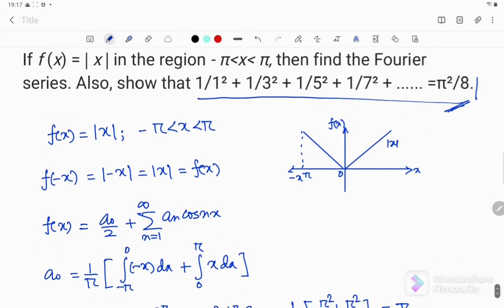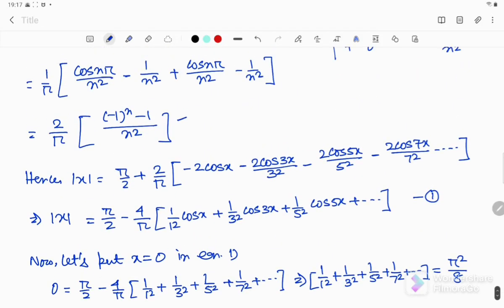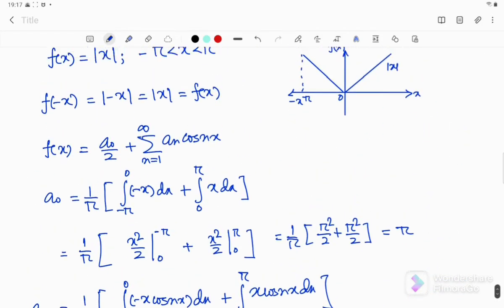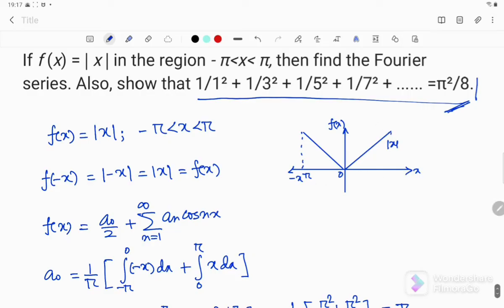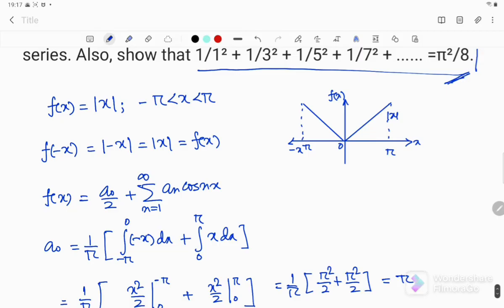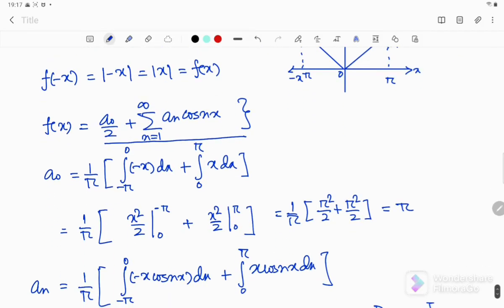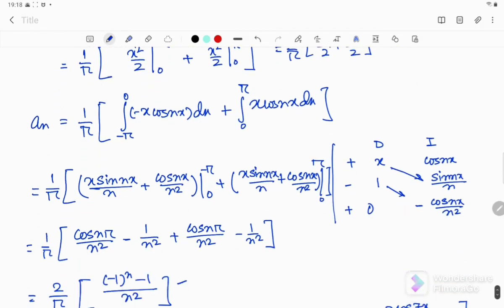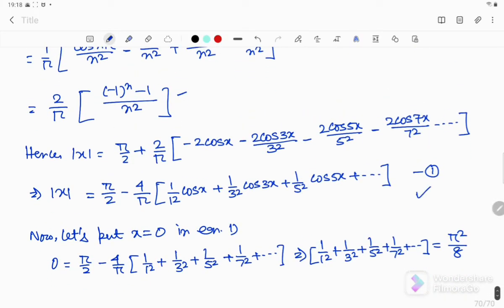So you can see that I have got the expression for mod x in the interval of minus pi to pi, and we have noticed that mod x is an even function. So I had to find only these two terms, a0 and an, and bn will be 0. And I have got the expression for mod x, and from that expression I also have obtained this expression as well. So hope you have understood the problem.